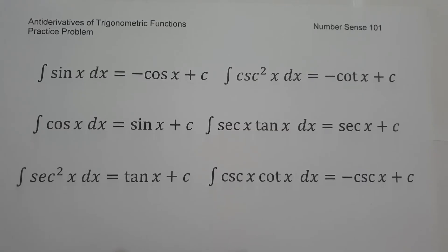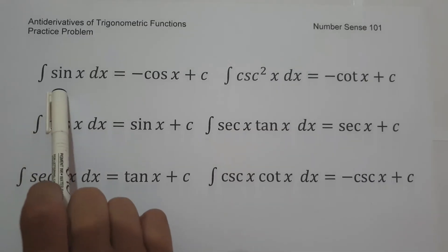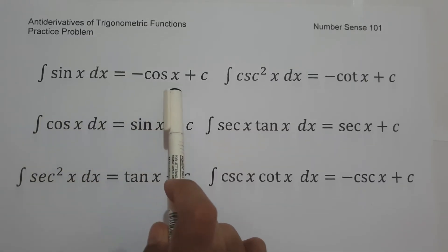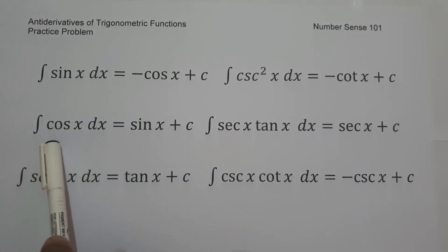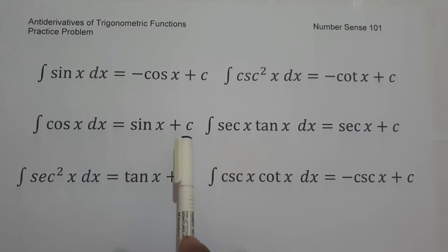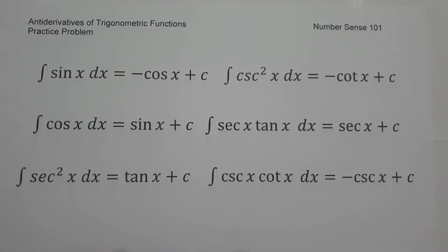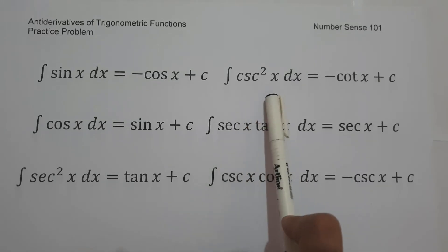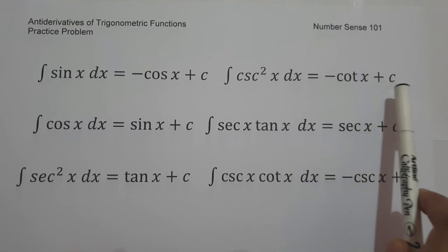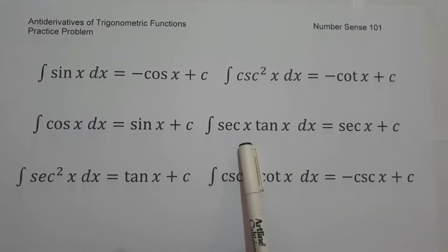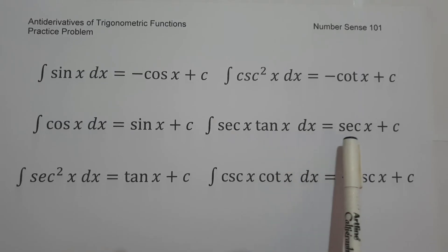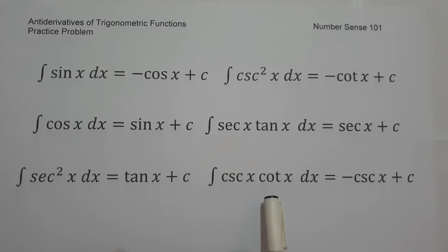These are the formulas that you need to remember. The first one: the antiderivative of sin x dx is equal to negative cosine x plus c. The second one: the antiderivative of cosine x dx is equal to sin x plus c. The next one is the antiderivative of secant square x dx is equal to tangent x plus c. Next is the antiderivative of cosecant square x dx is equal to negative cotangent x plus c. We have the antiderivative of secant x times tangent x dx is equal to secant x plus c. And the last one is the antiderivative of cosecant x times cotangent x dx is equal to negative cosecant x plus c.